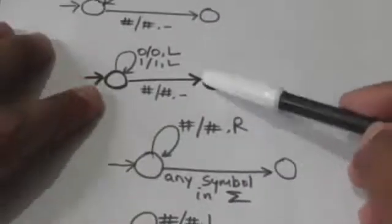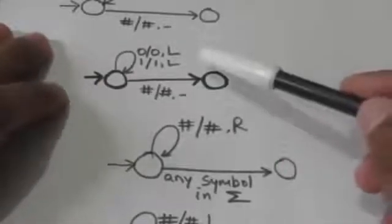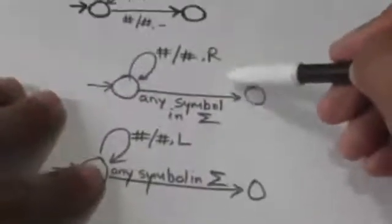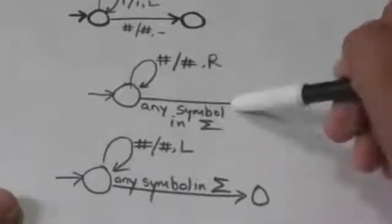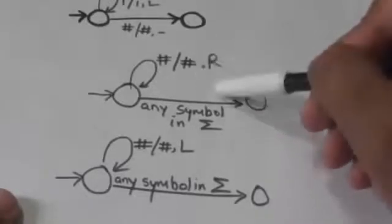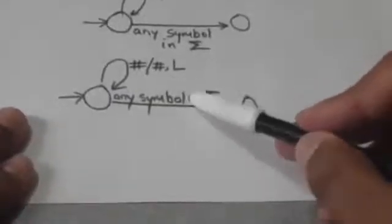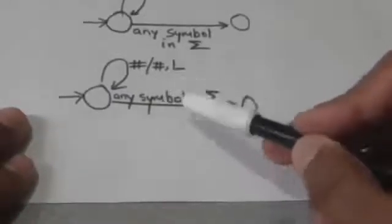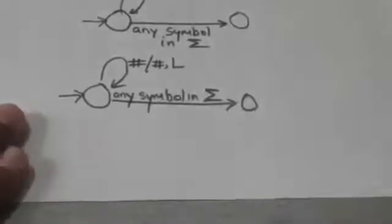Similarly, this Turing machine finds the first blank symbol to the left of the current head position. This Turing machine finds the first non-blank symbol to the right of the current head position. And this Turing machine finds the first non-blank symbol to the left of the current head position.